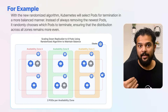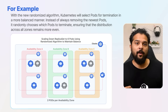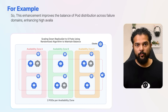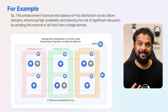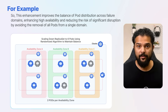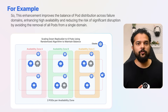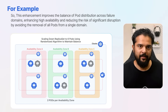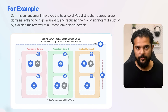This helps maintain stability and high availability by preventing any single zone from becoming underrepresented. The enhancement improves the balance of pod distribution across failure domains, reducing the risk of significant disruption by avoiding removal of all pods from a single domain, and ensuring a fairer approach to pod termination.